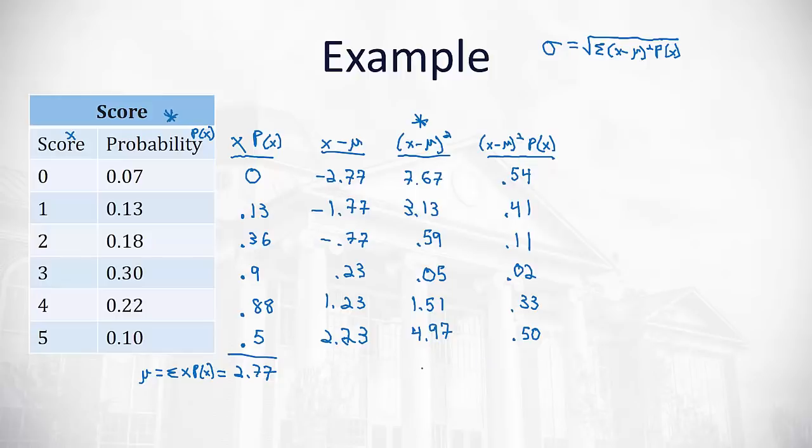And it says that we want the sum of all of that. The sum of the x minus μ squared times the probability of x means we have to add all of those together.